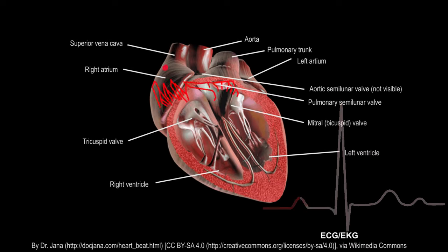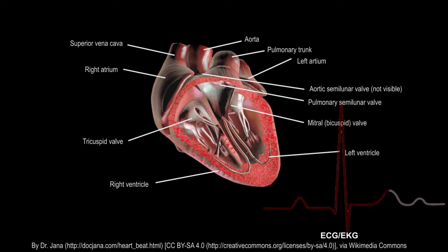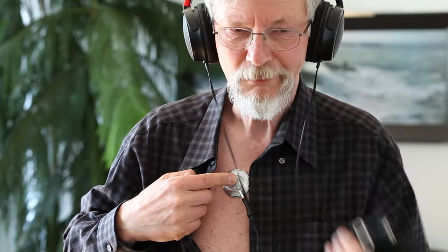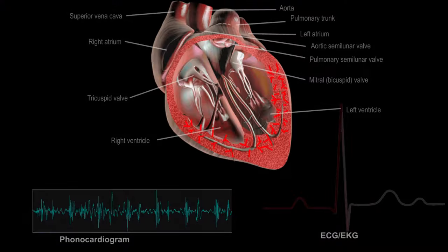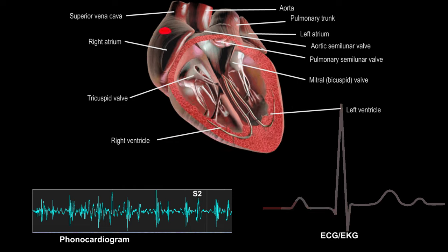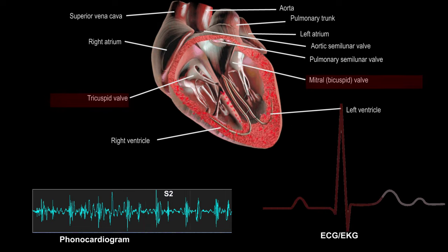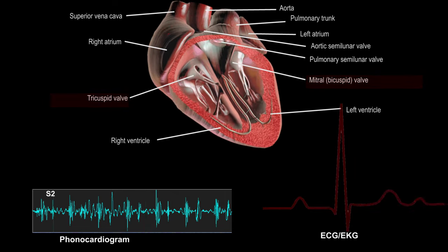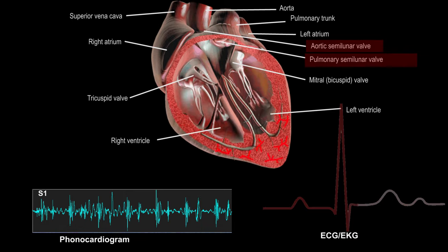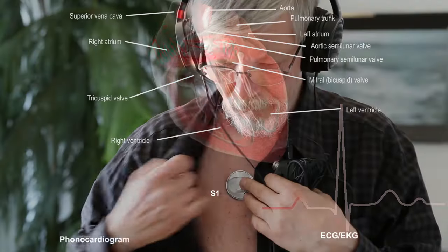Now, some theory. Heart sounds are generated by the beating heart — mostly by the shutting of heart valves and the flow of blood through the heart. The process of hearing these sounds for diagnostic purposes is called auscultation. In healthy adults, there are two main heart sounds called the first and second heart sound — S1 and S2. The first sound is produced when the atrioventricular valves — mitral or bicuspid and tricuspid — are closed, and the second sound is produced when the semilunar aortic and pulmonary valves are closed.